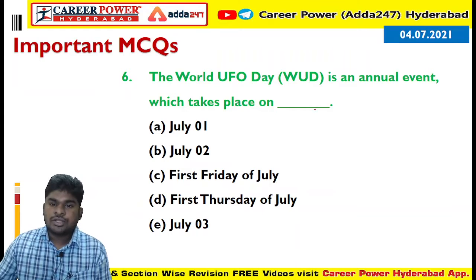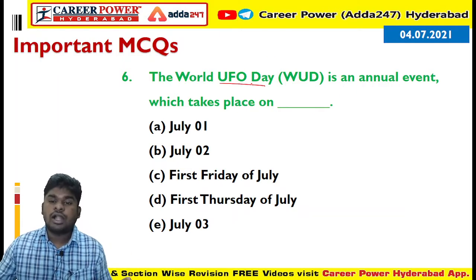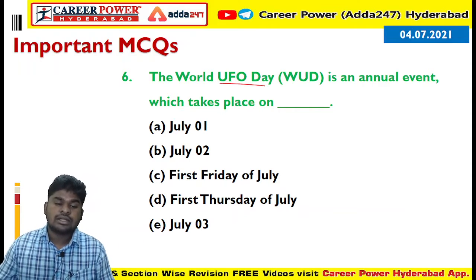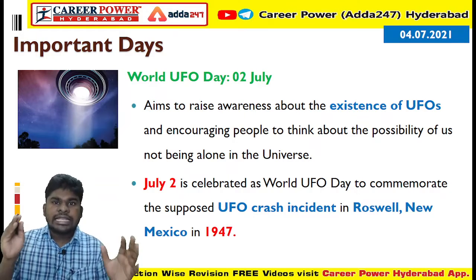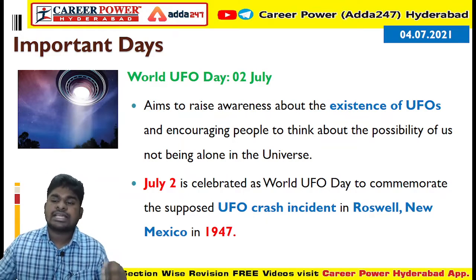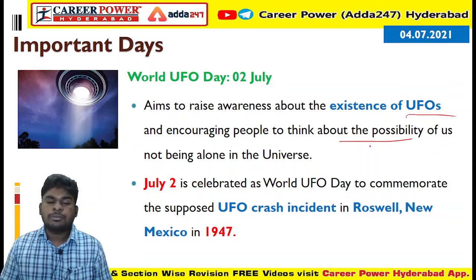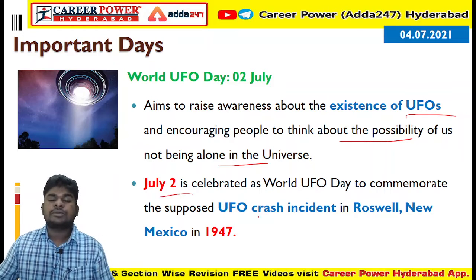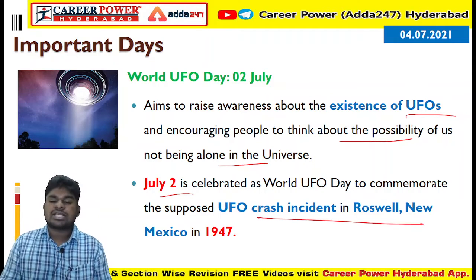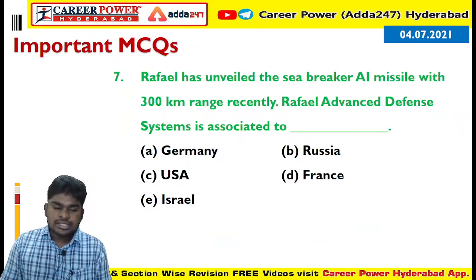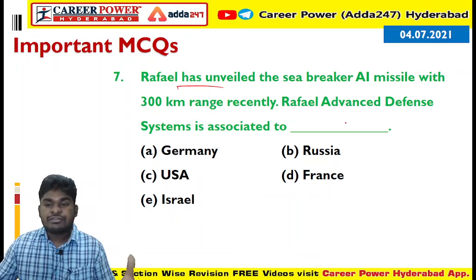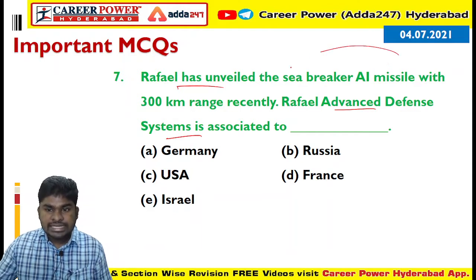Next question: World UFO Day — Unidentified Flying Objects — is an annual event which takes place on July 2nd. The main aim of the day is to create awareness about the existence of UFOs and the possibility that we are not alone in the universe. July 2nd is celebrated because on this day in 1947 a UFO crash occurred in Roswell, New Mexico, United States, and to commemorate this event, UFO Day is celebrated.